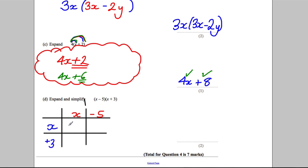X multiplied by x is x squared. X multiplied by negative 5 is negative 5x. Positive 3 multiplied by x is positive 3x. And positive 3 multiplied by negative 5 is negative 15.